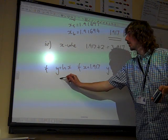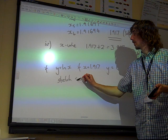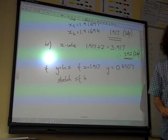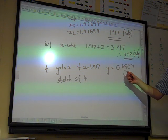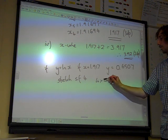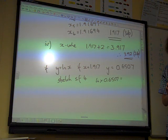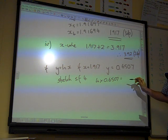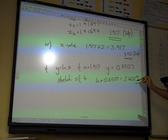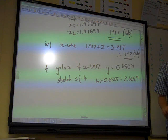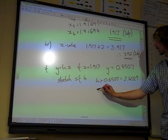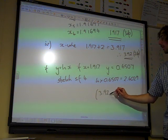4 times that is going to give us an answer of 2.6029. And so to 2 decimal places, we've got the point 3.92,